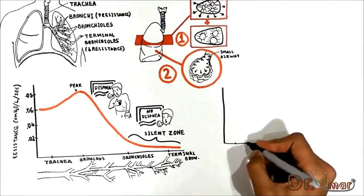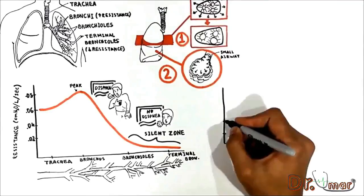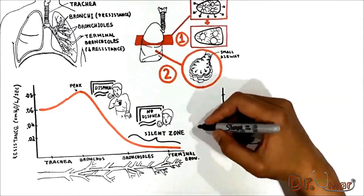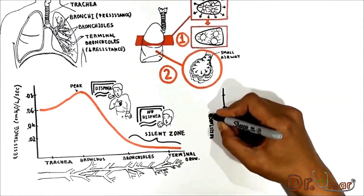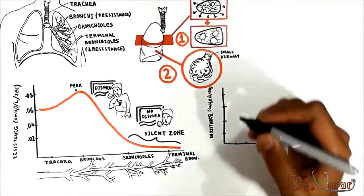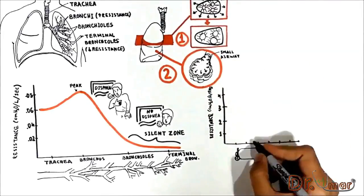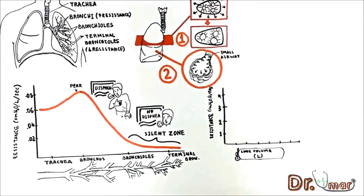Let's take a look at this graph showing the effect of lung volume on airway resistance. On one axis we have resistance and on the other lung volume. We are at this point.